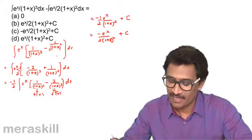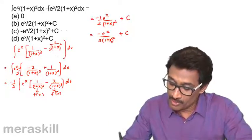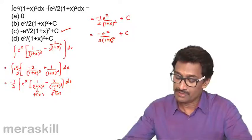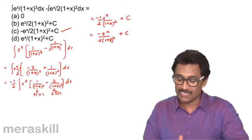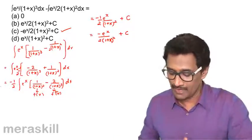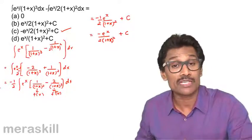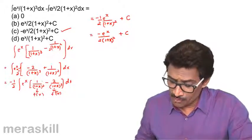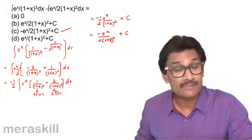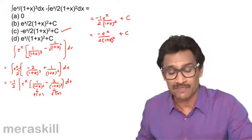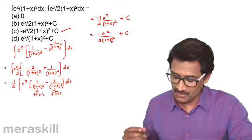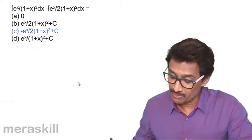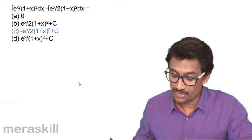Hence the answer is minus e raised to x upon [2·(1+x)²] plus C, which is option number C. You have to be careful about the sign — we take minus half outside because we want a minus sign in the f'(x) part.